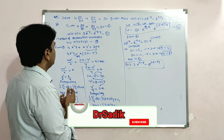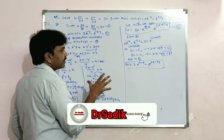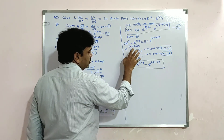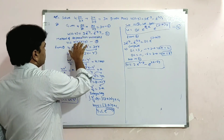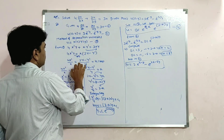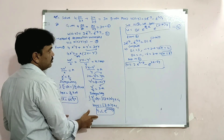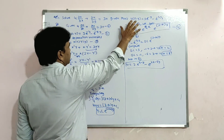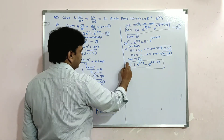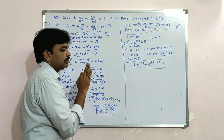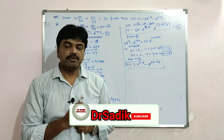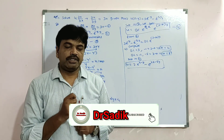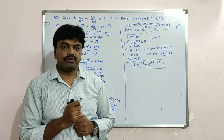This is a simple but important problem — do it carefully. Given the condition, set u as a product of the independent variables, separate the variables, get X and Y values, substitute, apply the condition, simplify, and you get the final u value. Hope you understand — please like and share this video, thank you for watching.